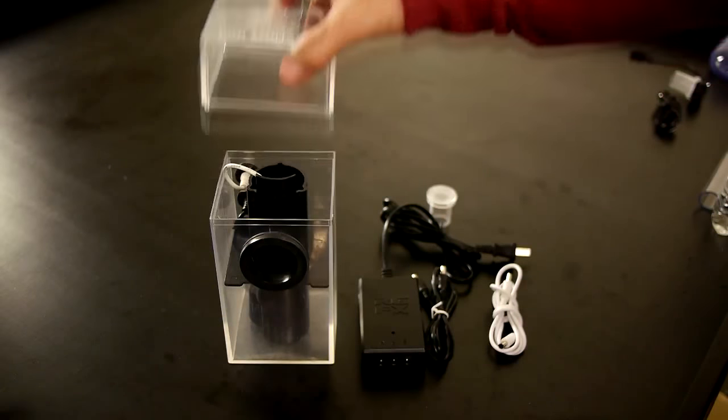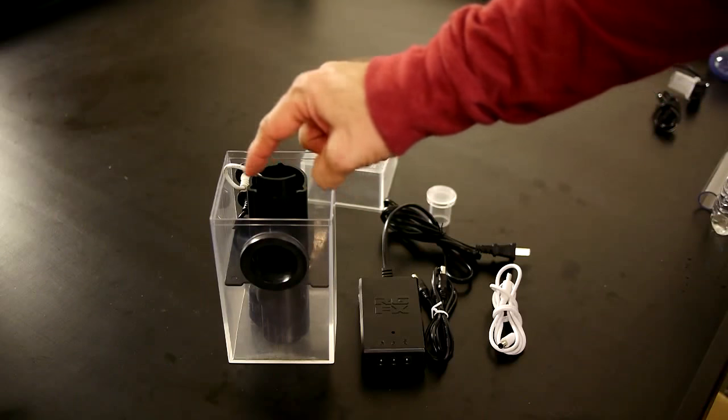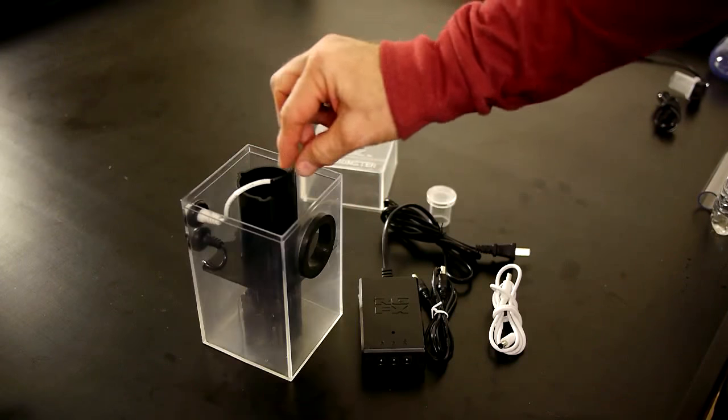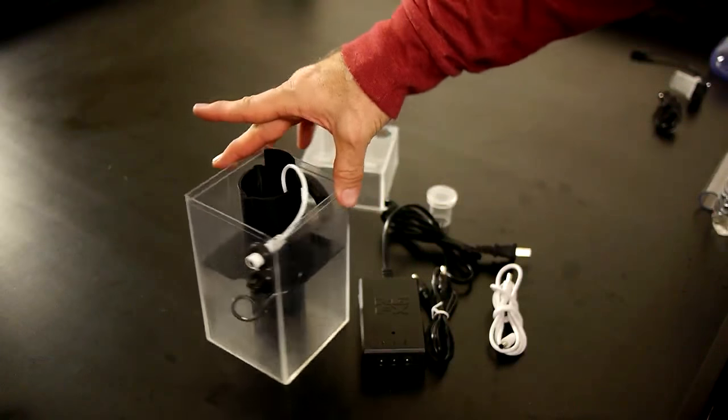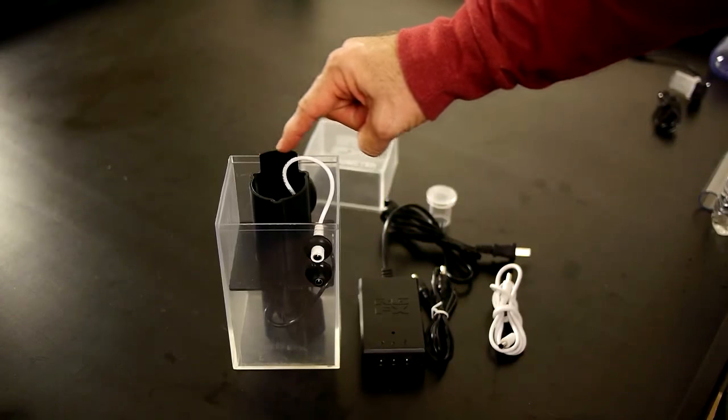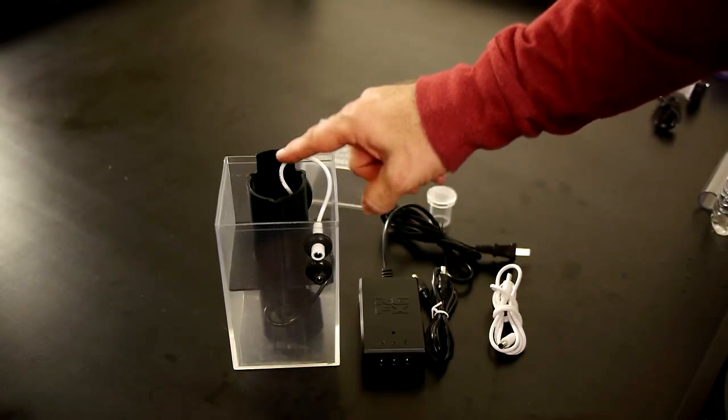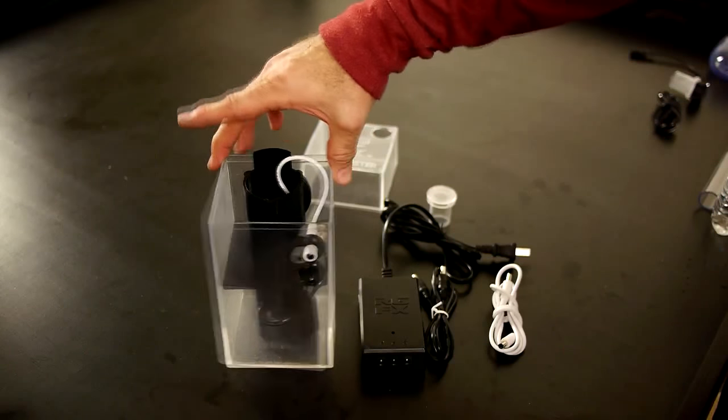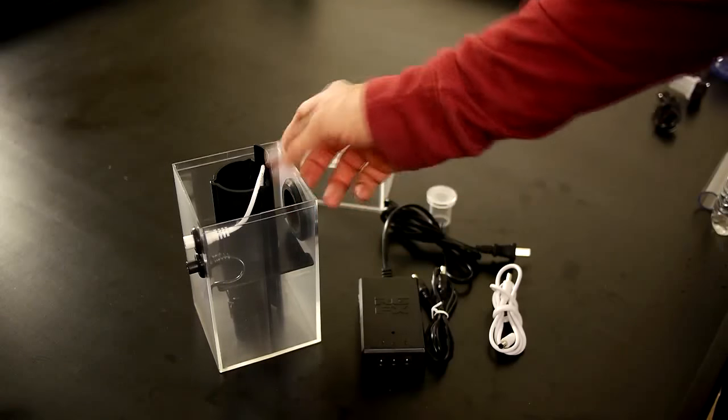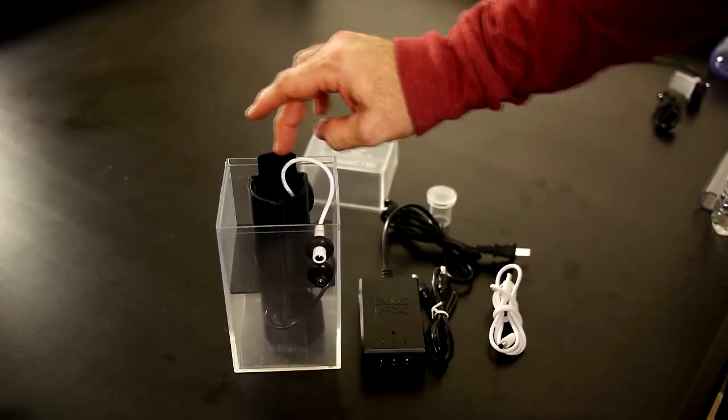You'll notice that this lip here on what we call the fog riser is in the front. Always aim this towards the front. As the water is coming out of here, it stops any little drops that might try to sneak out through the front here, so angle this towards the front.